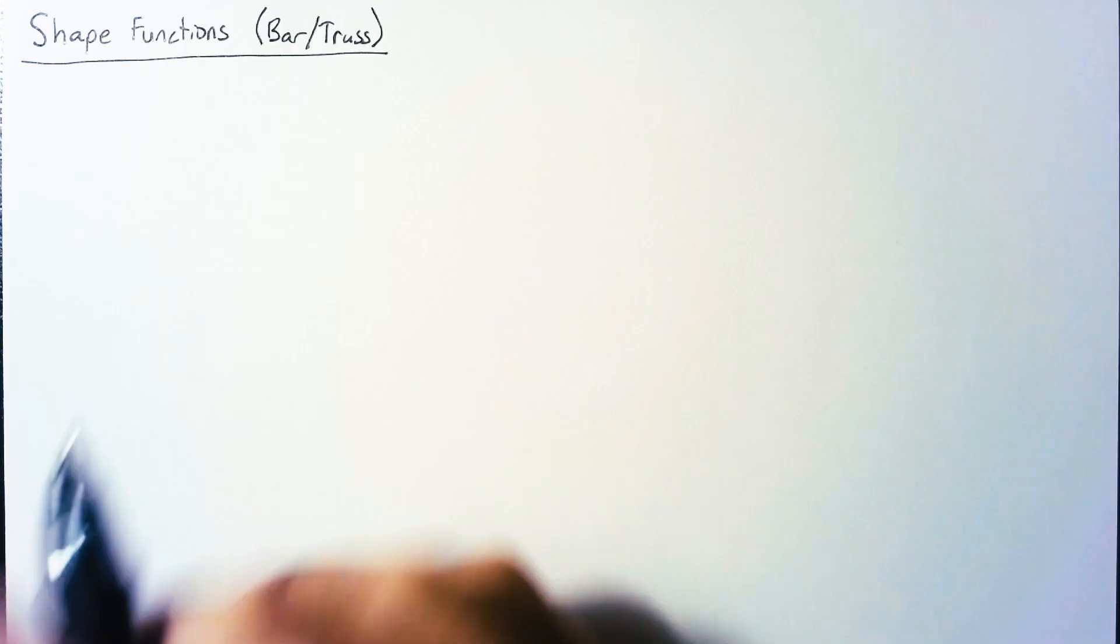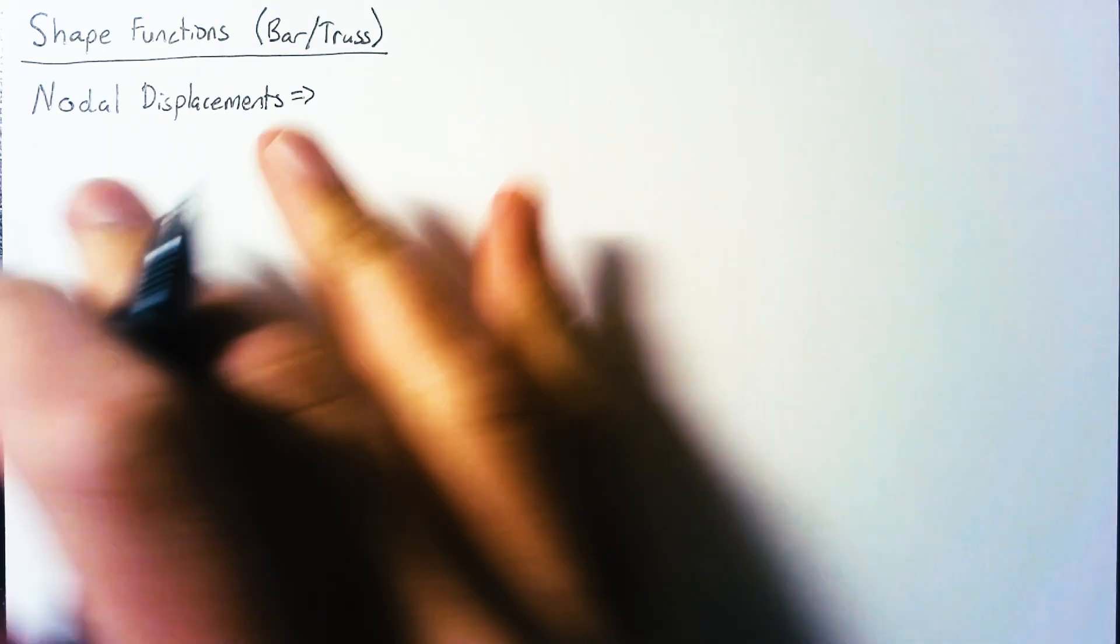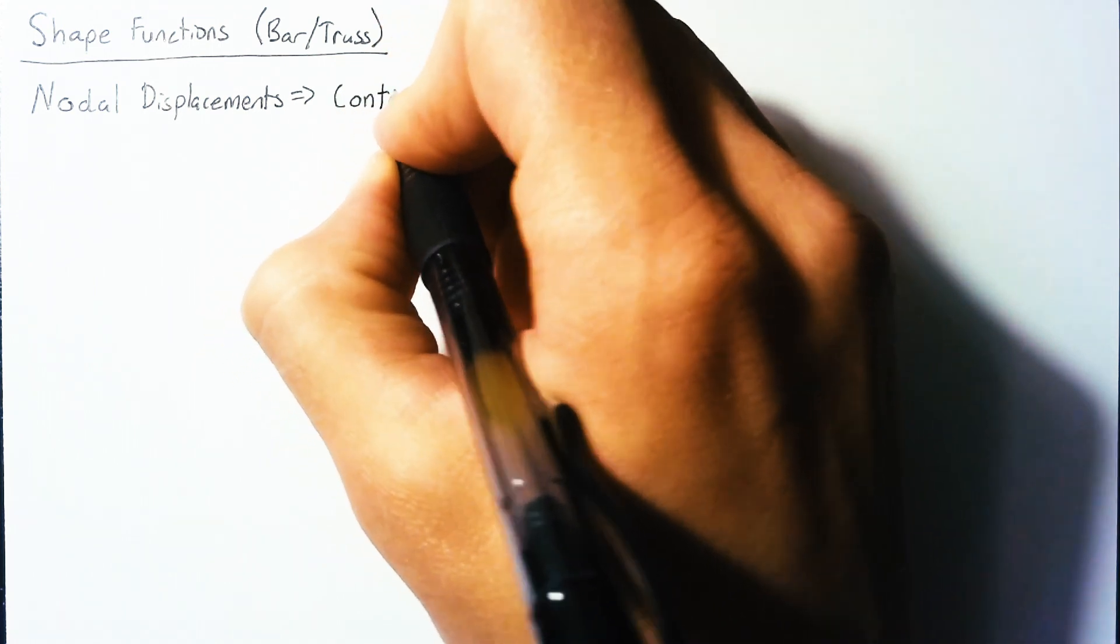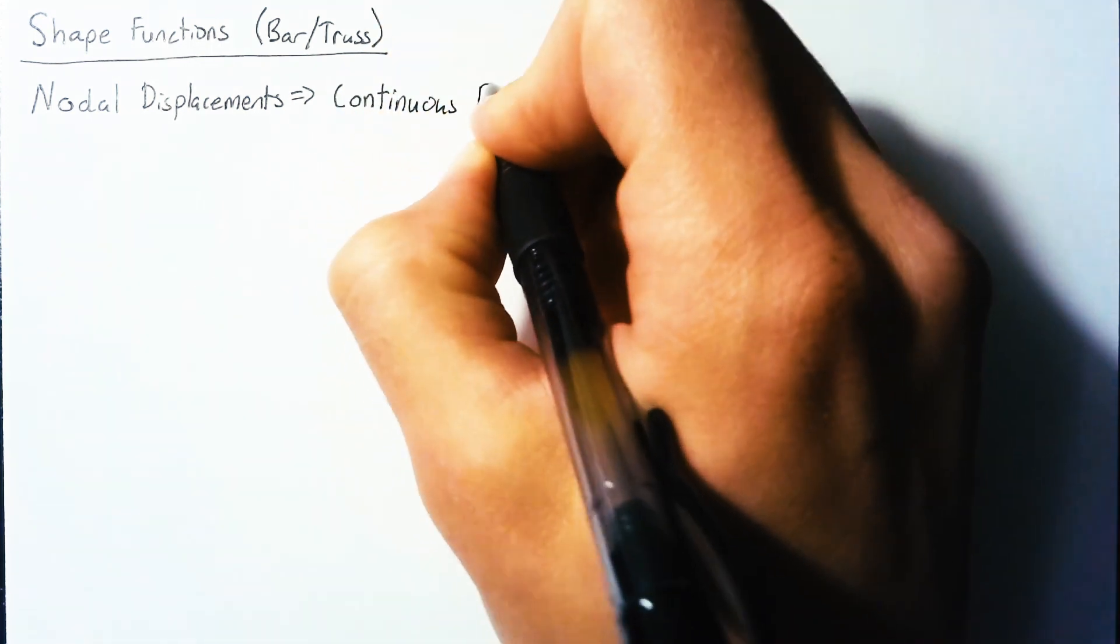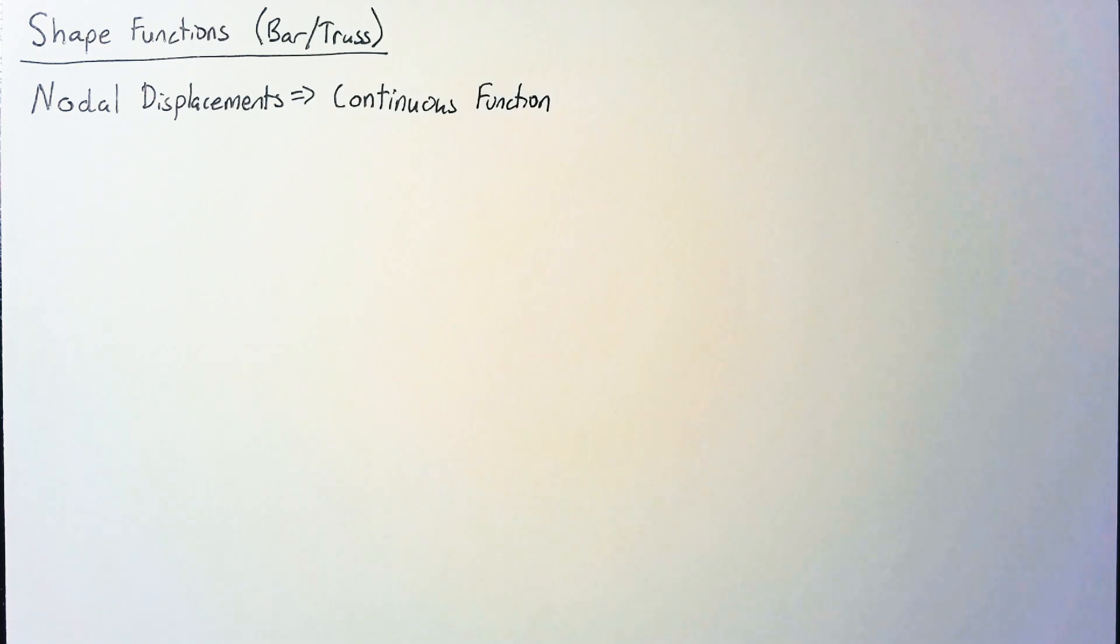First off, the goal of our shape functions is to take our nodal displacements, our u values, u1, u2, u3, and turn those nodal displacements into a continuous function. Meaning that if we know all of our nodal displacements, we can figure out what the displacement is at any point along our bar or truss.